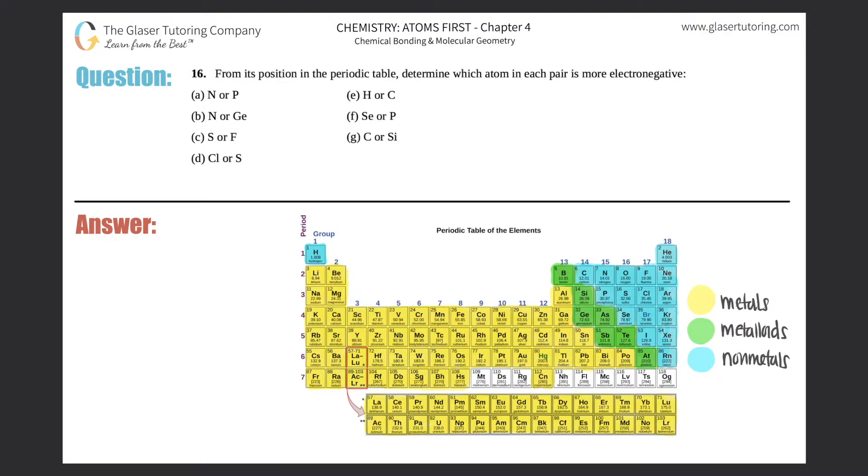Number 16. From its position in the periodic table, determine which atom in each pair is more electronegative. And then we have A through G.